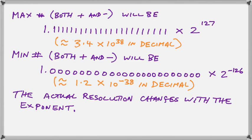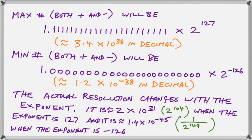The real problem is that the actual numerical resolution changes with the exponent. It is approximately 2 × 10 to the 31st power — which is actually 2 to the power of 104 — when the exponent is 127. And it is approximately 1.4 × 10 to the minus 45, an incredibly small number, or 1 over 2 to the power of 149, when the exponent is minus 126.